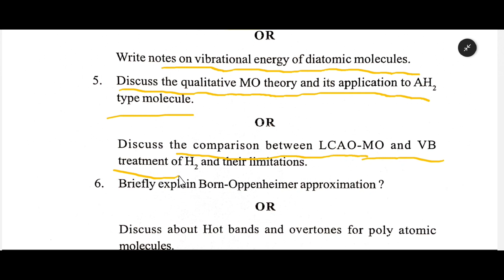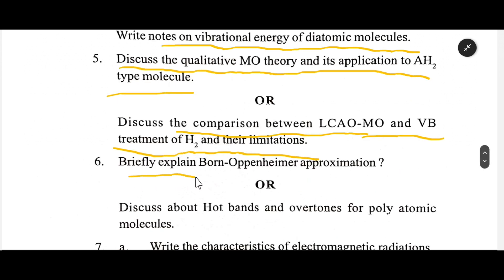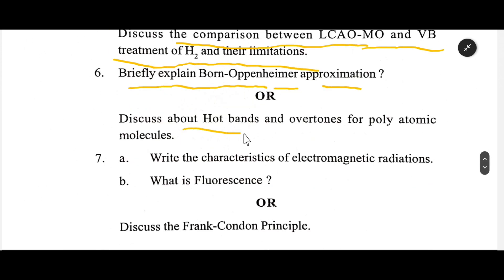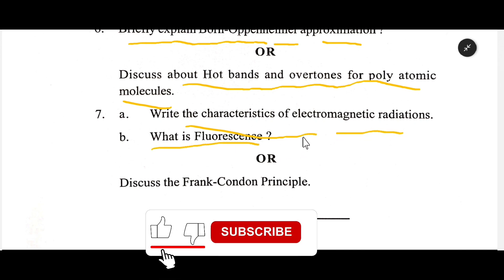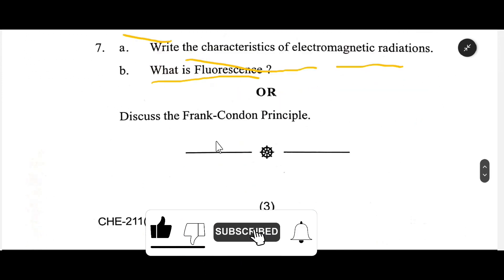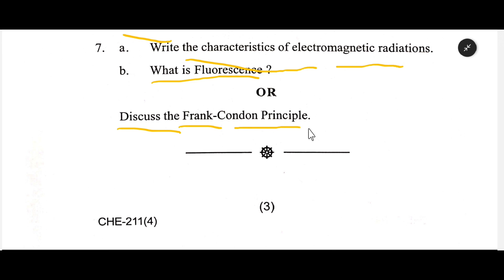Briefly explain Born-Oppenheimer approximation and discuss about hot bands and overtones for polyatomic molecules. Write the characteristics of electromagnetic radiation. What is fluorescence? Discuss the Franck-Condon principle.